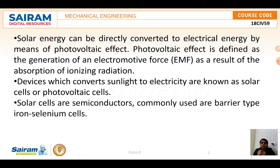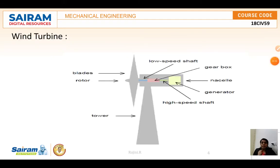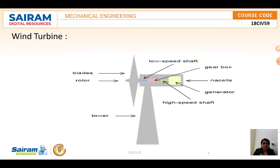Next is the wind turbine. A wind turbine is referred to as a wind energy converter — a device that converts the kinetic energy of wind into electrical energy. Wind turbines are manufactured in a wide range of vertical and horizontal axis designs. The smallest turbines are used for applications such as battery charging for small boats and traffic warning lights.